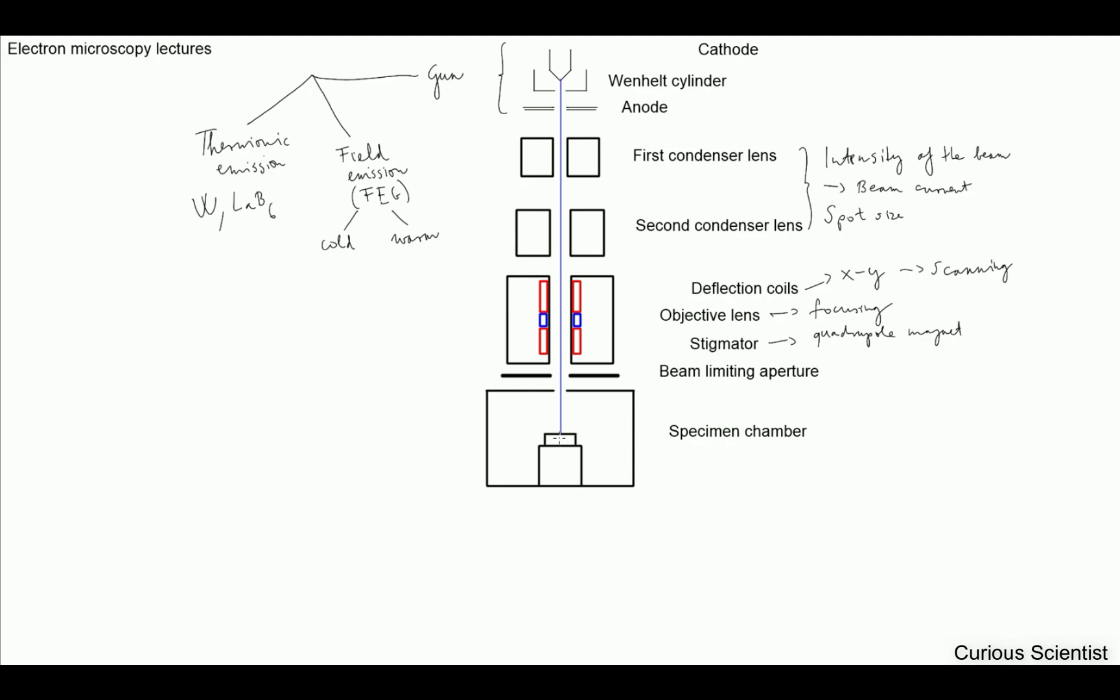Then the beam enters the specimen chamber and hits the surface of the specimen. There will be a lot of different products created because the electron beam interacts with the material in several different ways. Then there are several different detectors. I did not draw any detectors on purpose because I want to talk about them later. Basically you have several different products: backscattered electrons, secondary electrons, and other stuff, x-ray radiation. You can measure a lot of things based on the detector because you have the products created by the interaction of the electron and the material.